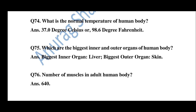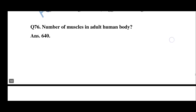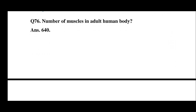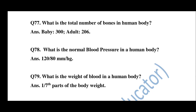Question number 74: What is the normal temperature of the human body? The answer is 37 degrees Celsius or 98.6 degrees Fahrenheit. Question number 75: The biggest inner organ is the liver and the outer organ is the skin. Question number 76: Number of muscles in the adult human body — 640. Question number 77: Total number of bones — baby 300, adult 206.